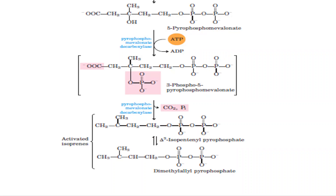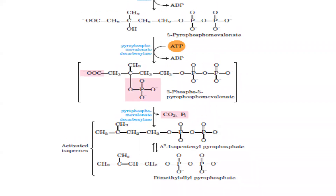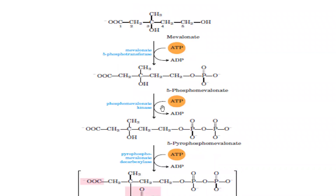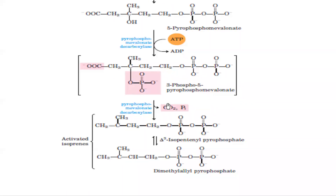This delta-3-isopentenyl pyrophosphate can undergo isomerization — the double bond is simply rearranged — to form dimethylallyl pyrophosphate. These two are isomers, and dimethylallyl pyrophosphate is another activated isoprene unit formed in this biosynthetic pathway. So the second step is the conversion of mevalonate into two types of activated isoprene units.